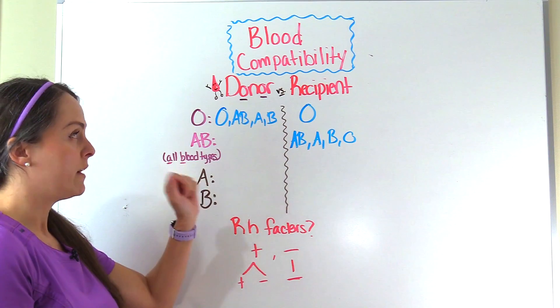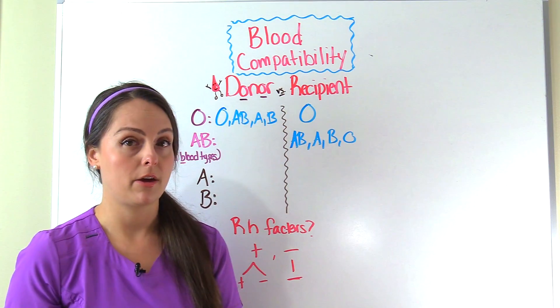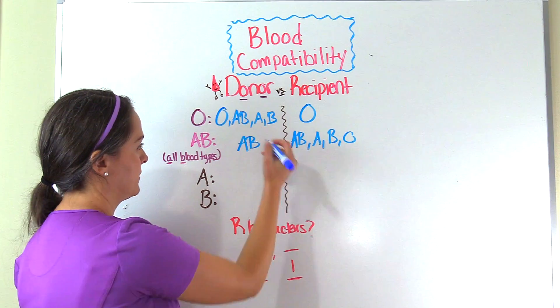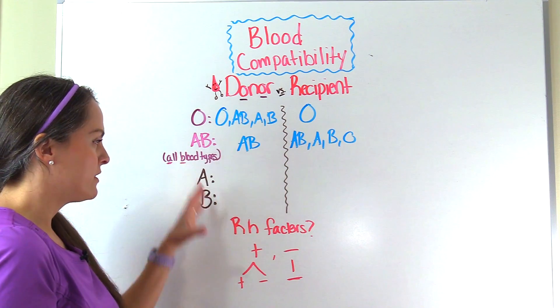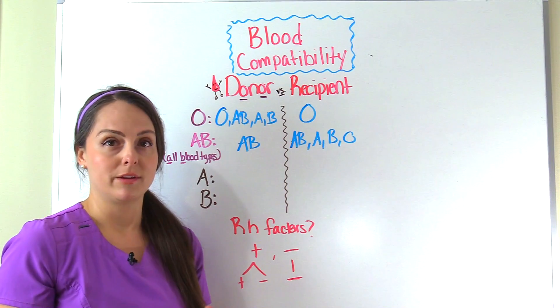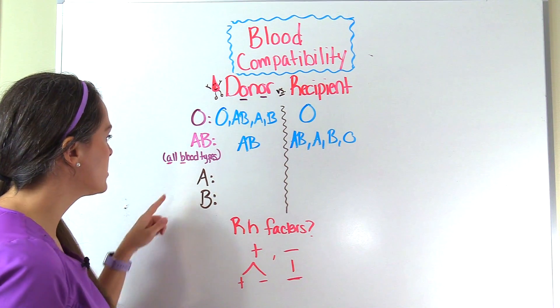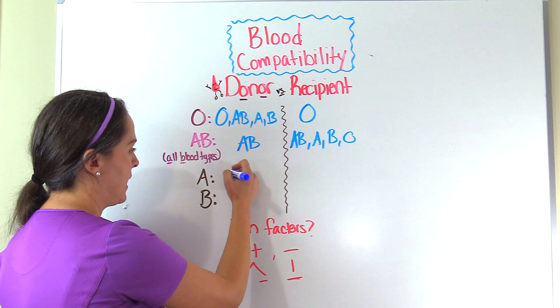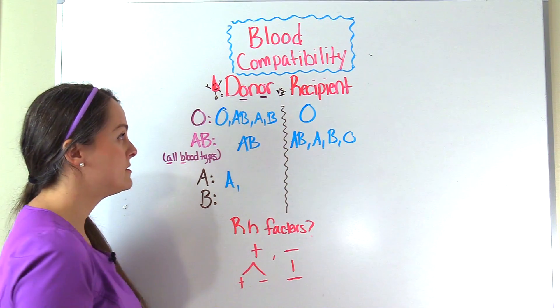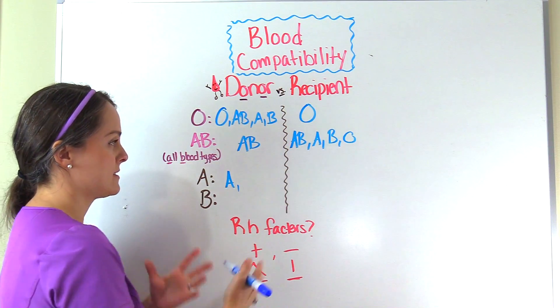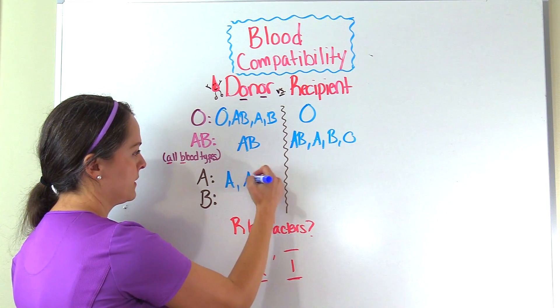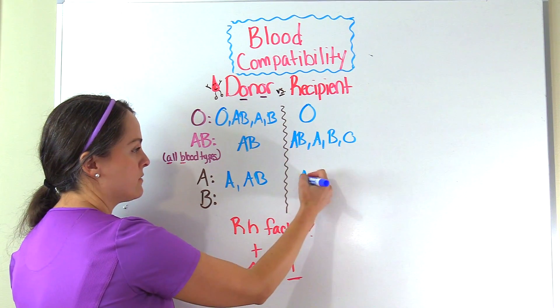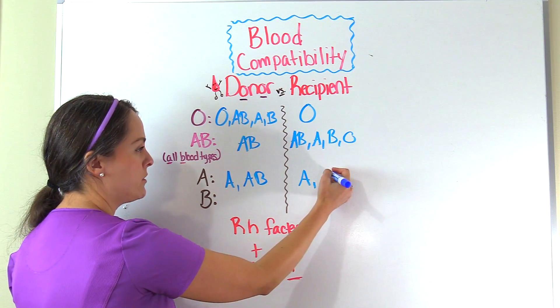They are very specific about who they can donate to though. They can only donate to other AB's. Now that we have that information, everything else is easy to fill out with the A type and B type. A's can donate to other A's and AB's because they like all blood types. A's can receive from other A's and from the universal donor O's.